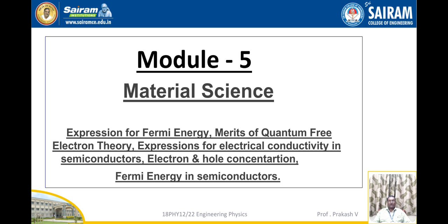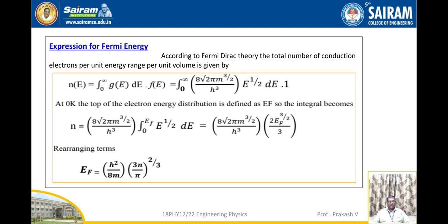Expression for Fermi energy. According to Fermi-Dirac theory, the total number of conduction electrons per unit energy range per unit volume is given by n(E) equal to integration from 0 to infinity of g(E) f(E) dE. Substituting the corresponding values, we get integration from 0 to infinity of 8√2 π m^(3/2) by h³ into f(E) dE.